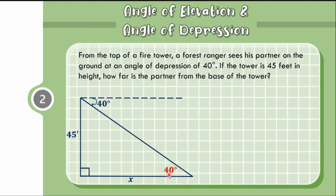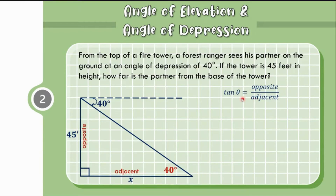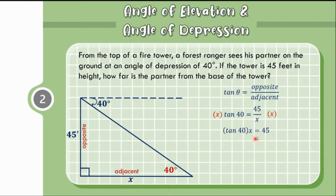Since 40 degrees is our reference angle, X here is the adjacent side of this right triangle with respect to this angle, while 45 feet is the length of the opposite side. So we have opposite and adjacent. The trigonometric function we must use is the tangent function, where tangent theta equals opposite over adjacent. With theta equal to 40 degrees, the opposite side is 45 feet, and the adjacent side is X. Therefore, we have tangent 40 equals 45 over X. Multiplying both sides by X, we get tangent 40 times X equals 45.